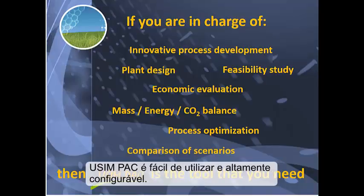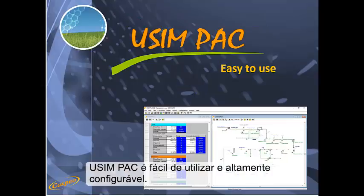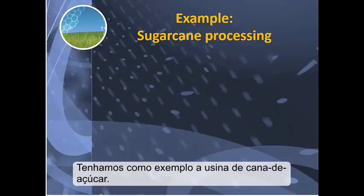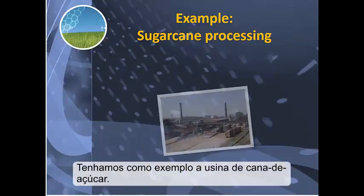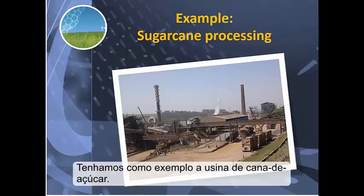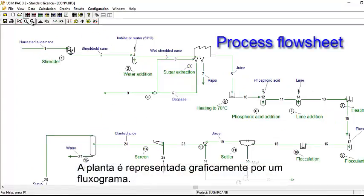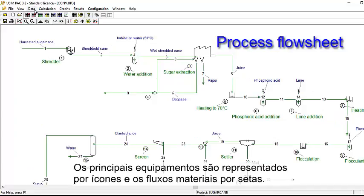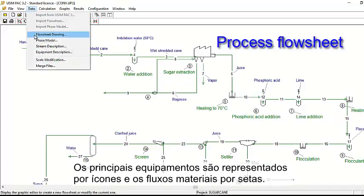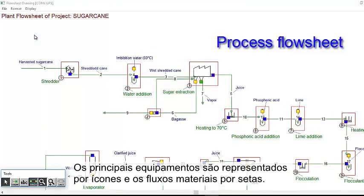Usimpak is easy to use and highly configurable. Let's take the example of a sugarcane factory. The plant is represented graphically by a flow sheet. The main pieces of equipment are represented by icons, and the material flows by arrows.